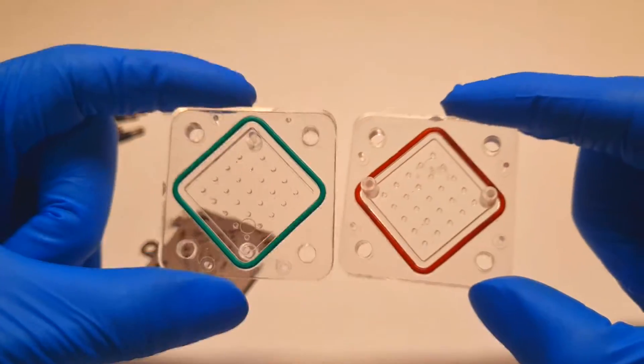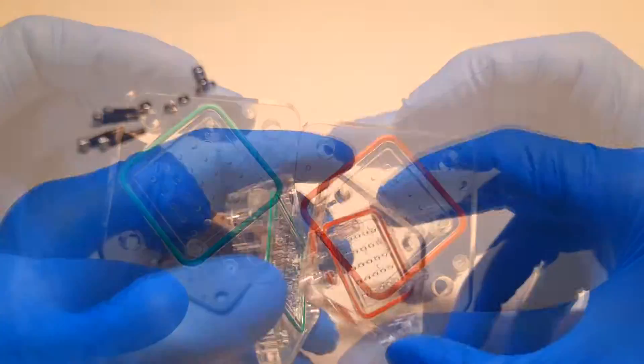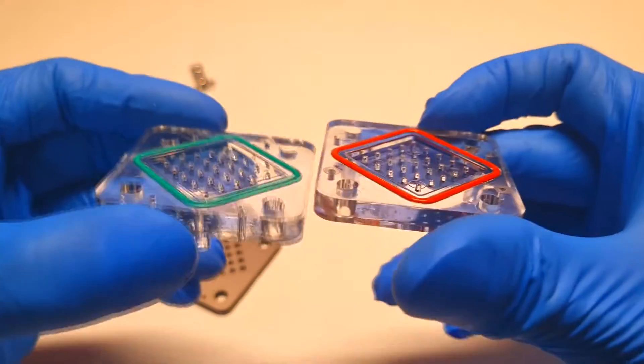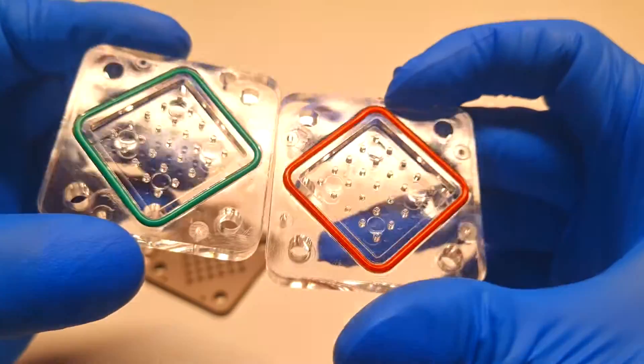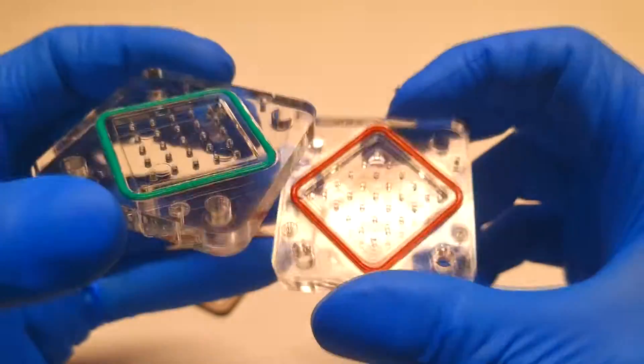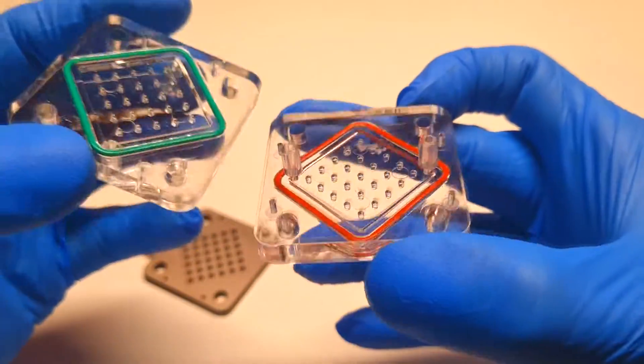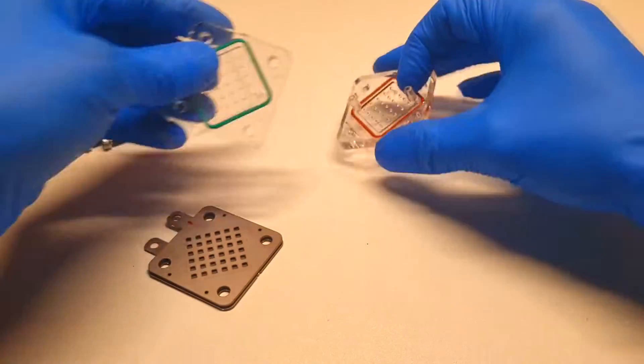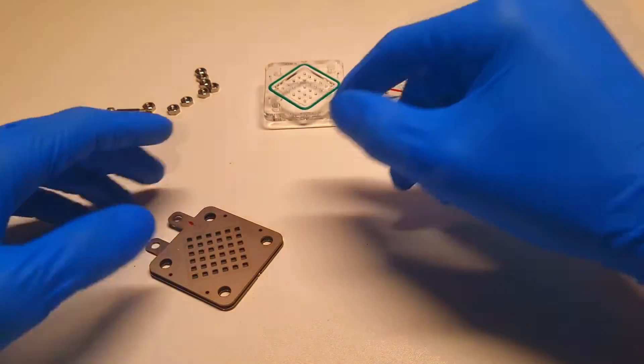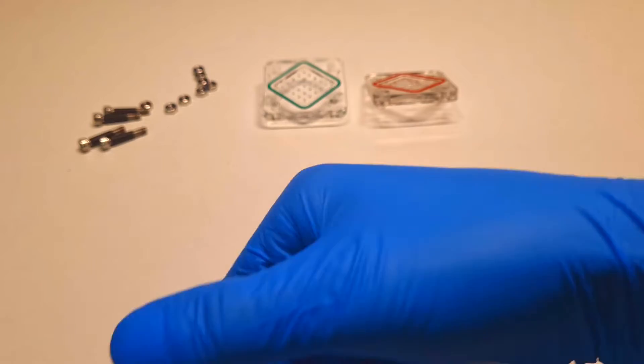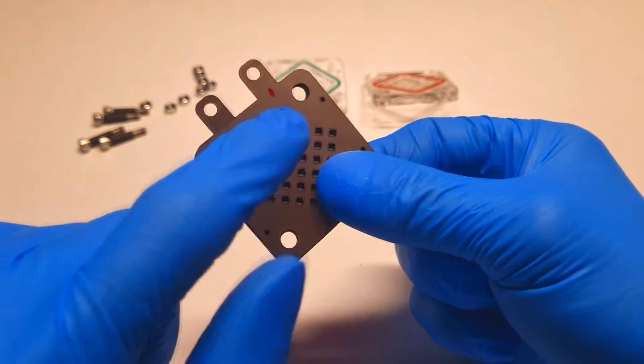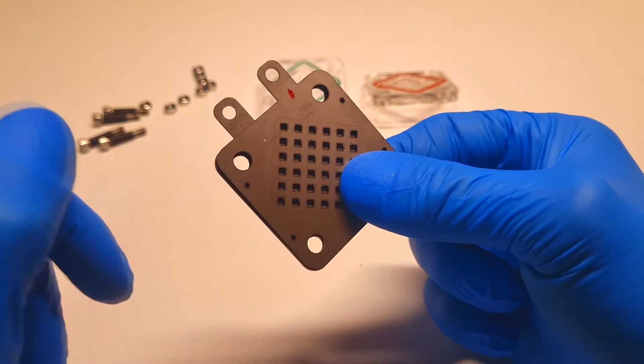These are the acrylic end plates with some gasket on each side. And this is the actual cell. These are the current collectors.